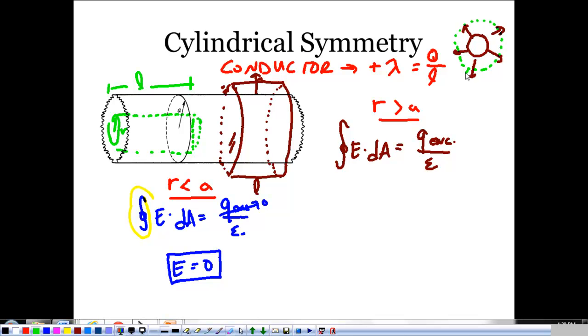If my Gaussian surface is concentric to that cylinder, we see it coming out at 90 degrees, taking care of the dot product, and we see that the electric field is constant. All points on this thing, all the way throughout, the electric field is the same. So it can come out of my integration. And I've got the electric field times the closed integral dA, and that's equal to my enclosed charge over epsilon naught.